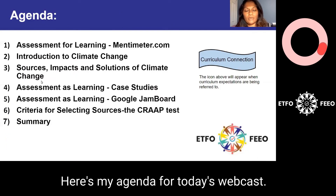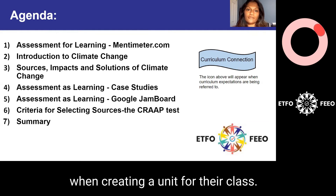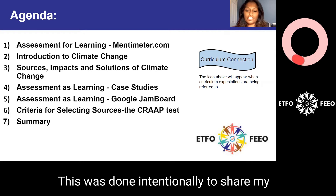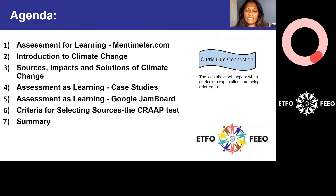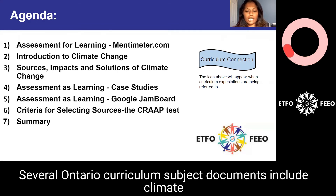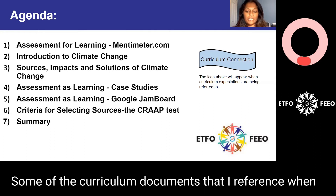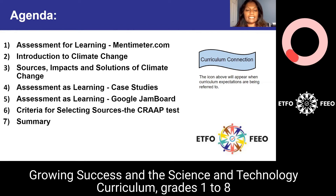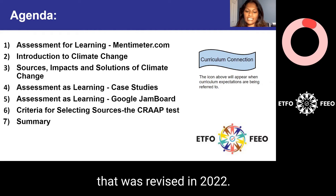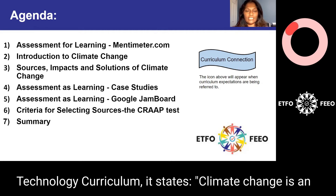Here's my agenda for today's webcast. My agenda follows a typical pattern of what an educator would use when creating a unit for their class. This was done intentionally to share my own planning process in creating a unit on climate change for my classroom. Several Ontario curriculum subject documents include climate change as a topic that can be integrated to create cross-curricular learning. Some of the curriculum documents I reference when planning are the environmental education scope and sequence, growing success, and the science and technology curriculum grades one to eight, revised in 2022.